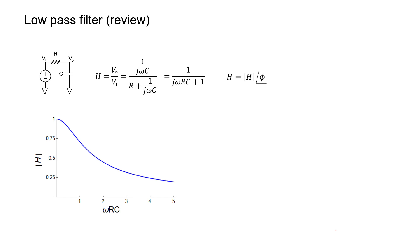From the magnitude plot, we can clearly see that this is indeed a low-pass filter. At low frequencies, the transfer function is 1. But at high frequencies, the transfer function goes to 0, and the signal can't make it through the filter at high frequencies.